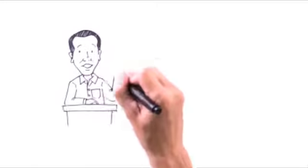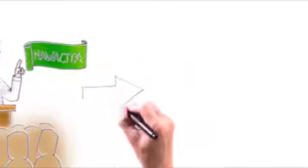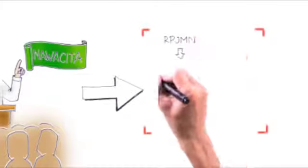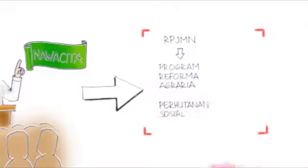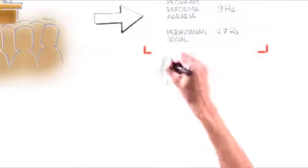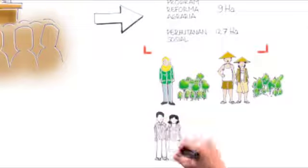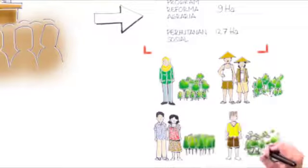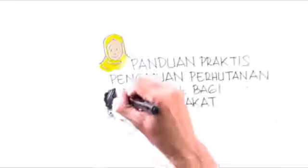Among the priorities of Jokowi's government is to begin the development of Indonesia from the suburbs through the Agrarian Reform Program with a total of 9 million hectares of land and the Social Forestry Program with a total of 12.7 million hectares of land. Both these programs are intended to overcome inequality relating to ownership and tenure of land in villages.